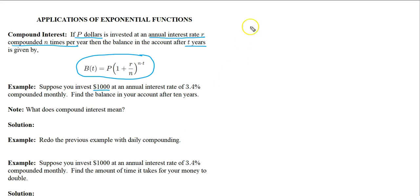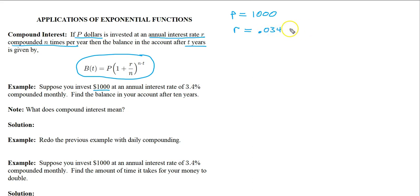In this case P is $1,000 — that's what you start with. The r is going to be 0.034, not 3.4. That's 3.4 divided by 100, and that's the actual value we use when we plug a rate into a mathematical formula.